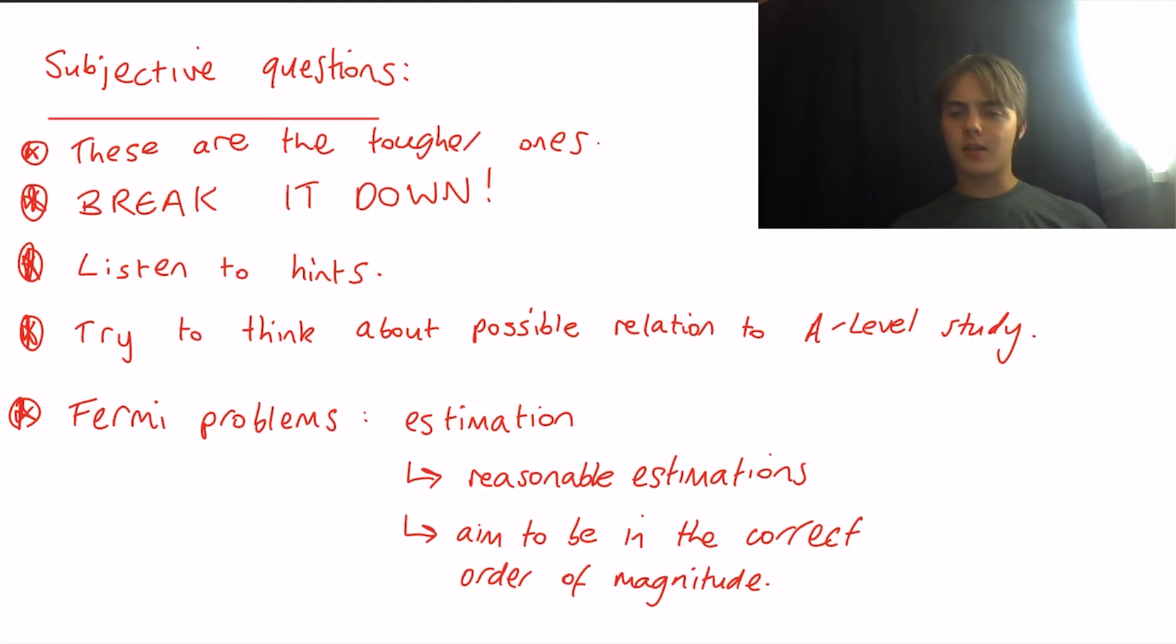You might also get asked about things called Fermi problems. Now Fermi problems are very simply problems that are very difficult to give an exact answer to. They're problems of estimation. For example, how many grains of sand is in a pyramid? And so you give reasonable estimations that aim to be in the correct order of magnitude. So how many, how big is a grain of sand? How many grains of sand would be in, for example, one kilometre? How, what's the volume of a pyramid? Things like that. And you're not aiming to get an exact answer. You're aiming to get something that's around about correct.